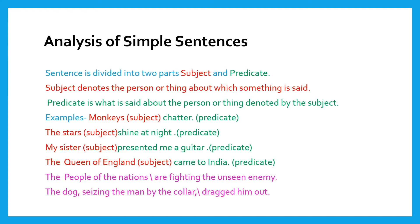As we understand, a sentence is divided into two parts: subject and predicate. The subject denotes the person or thing about which something is said, and the predicate is what is said about that person or thing. For example, 'Monkeys chatter' — monkey is the subject, chatter is the predicate. 'My sister presented me a guitar' — my sister is the subject, presented me a guitar is the predicate.